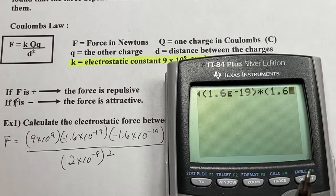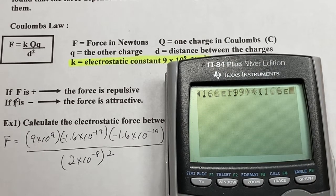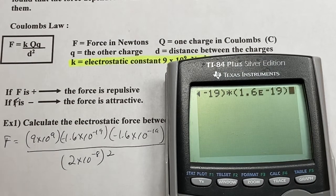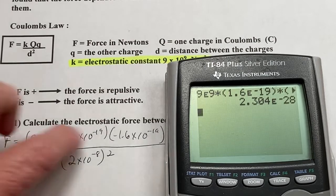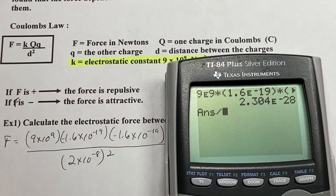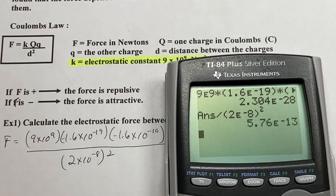Times parentheses. I'm doing that because some of yours will mess up if you don't. 1.6 second EE negative 19th. Now, I typically hit enter here, so I know that I've taken care of that, and then I divide. Okay, 2 second EE negative 8 squared. There we go.